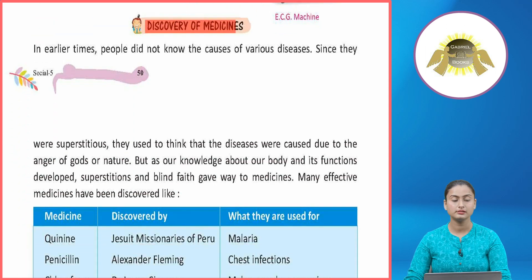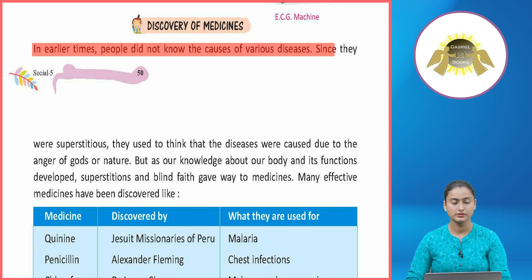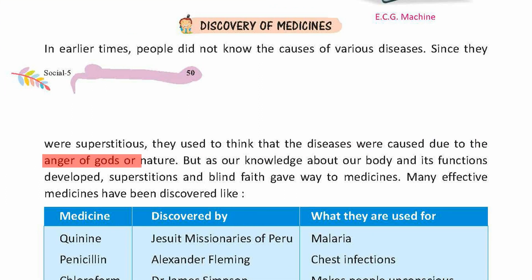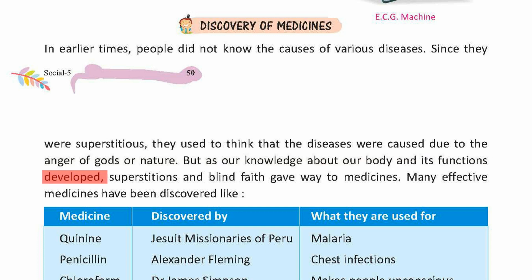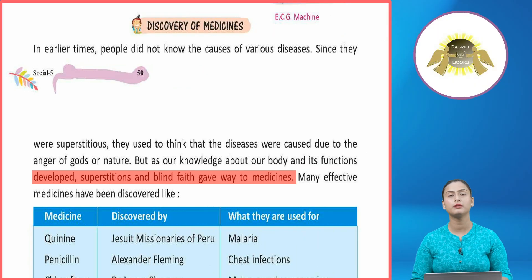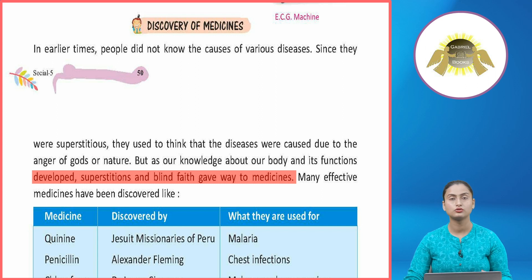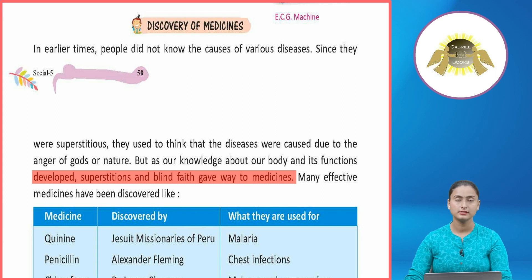Discovery of Medicines: In earlier times, people did not know the causes of various diseases. Since they were superstitious, they used to think that diseases were caused due to the anger of gods or nature. But as knowledge about our body and its functions developed, superstitions and blind faith gave way to medicine. With time, as people started studying, observing, and conducting research, they developed different types of medicines.